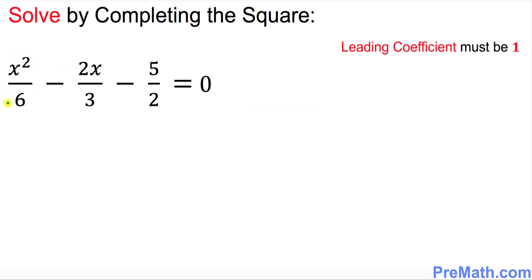If you look at it over here, the leading coefficient is not 1. You see that it's dividing by 6. So how can we make it 1? By just simply multiplying by 6.